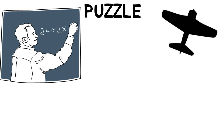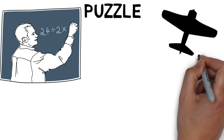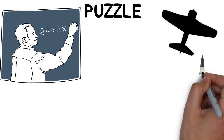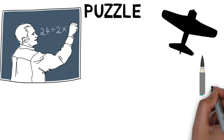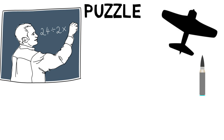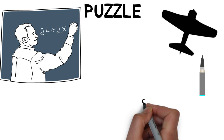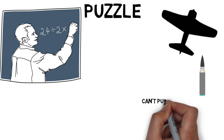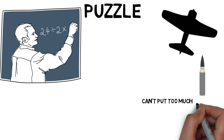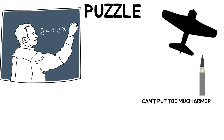Many planes went into the war zone, some never came back, and some came back with a lot of bullet holes, but they survived, luckily. Officers wanted to put armor over the planes to help shield them from bullets, but they cannot put too much armor on or the weight will be too high.